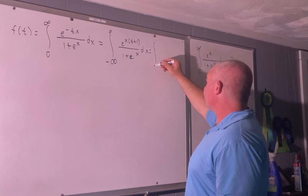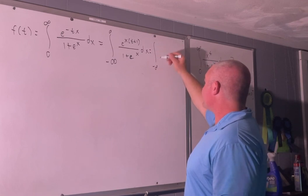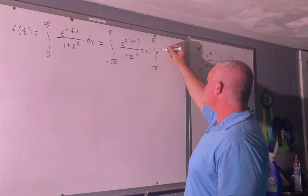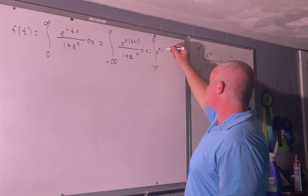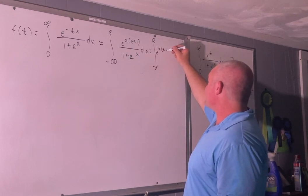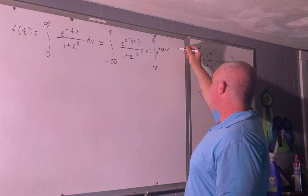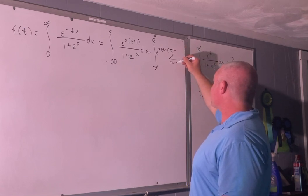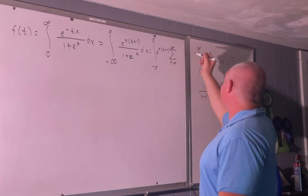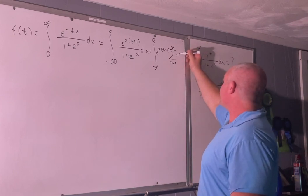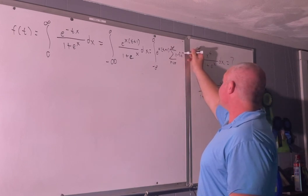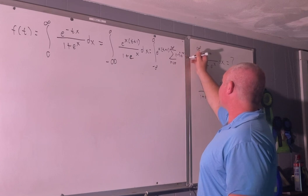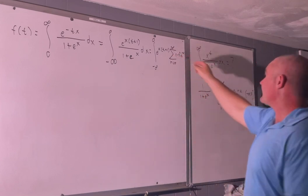So this is going to be equal to the integral from negative infinity to 0, and then we'll still have e to the x times t plus 1, times the sum going from 0 to infinity of negative 1 to the n times e to the nx, all integrated with respect to x.